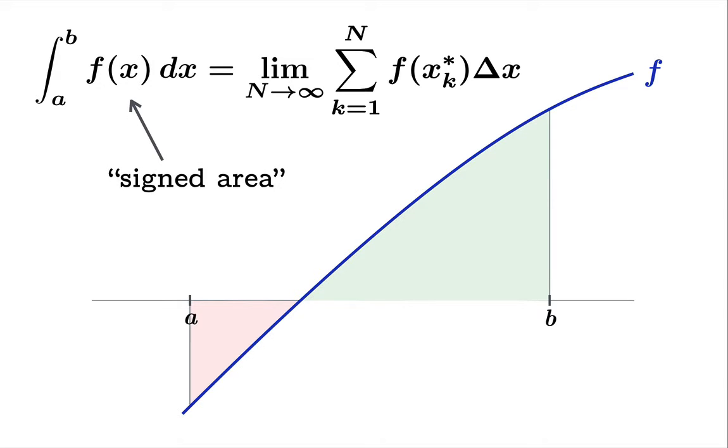And it is what we interpret to be the signed area under the graph. So we'll take the area above and the area below and we'll subtract those. And that's what we mean by signed area.